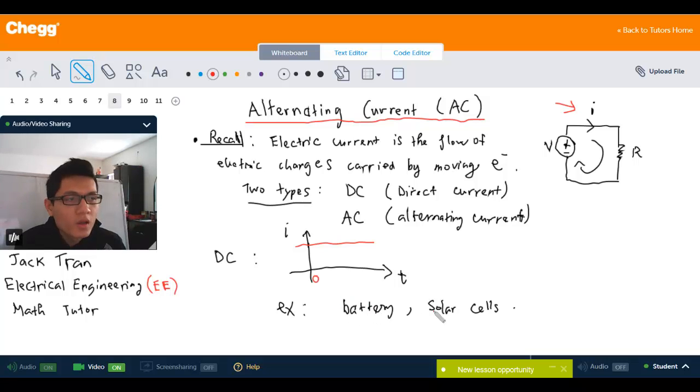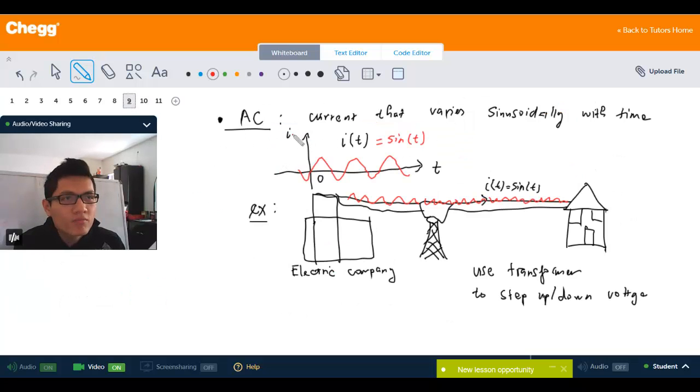And now AC is the current that varies sinusoidally with time. So looking at this figure, you can see that the current depends on the time t. At t equals 0, the current is 0. But then when you vary the time t, the current is changing and the slope is not 0 compared to the previous picture.